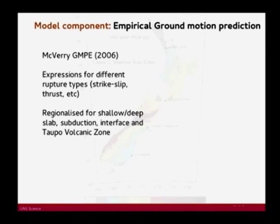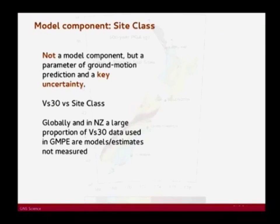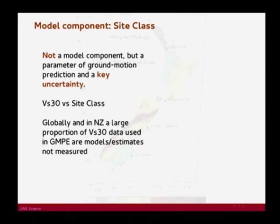Site class is not a model component as such, but it really is one of the key uncertainties in seismic hazard estimation. There are lots of debates — VS30 versus site class is a big one, with people arguing on both sides. An important point is that a large proportion of the VS30 data used even in ground motion prediction equations — including in the PEER database, considered the gold standard for developing GMPEs — is actually a model or estimate, not a true measured VS30. So it's something to keep in mind regarding uncertainties.